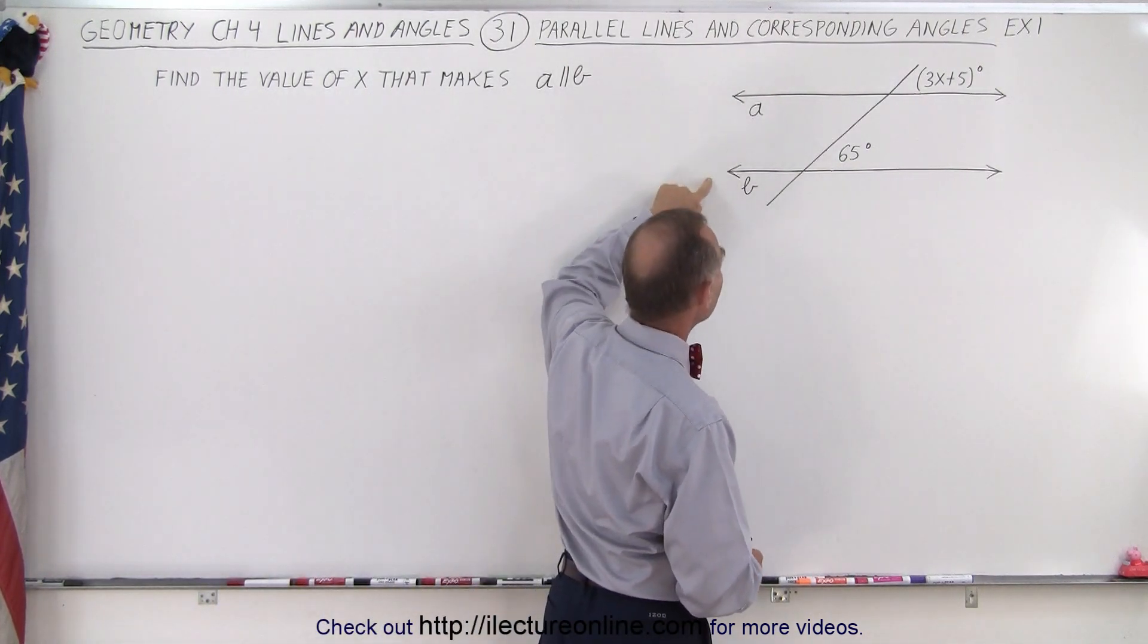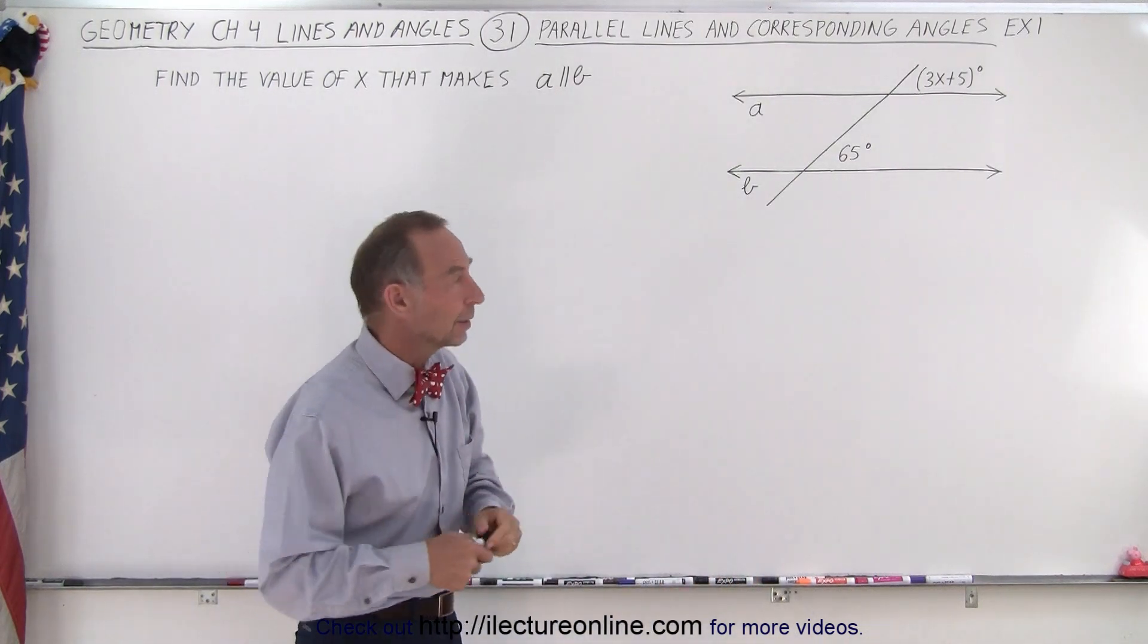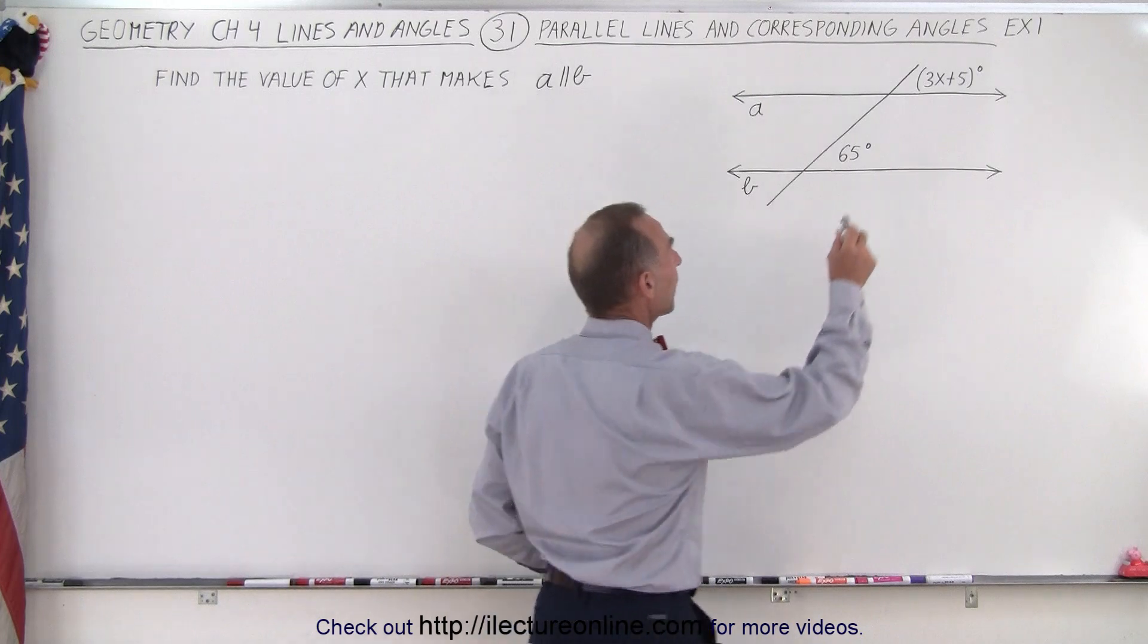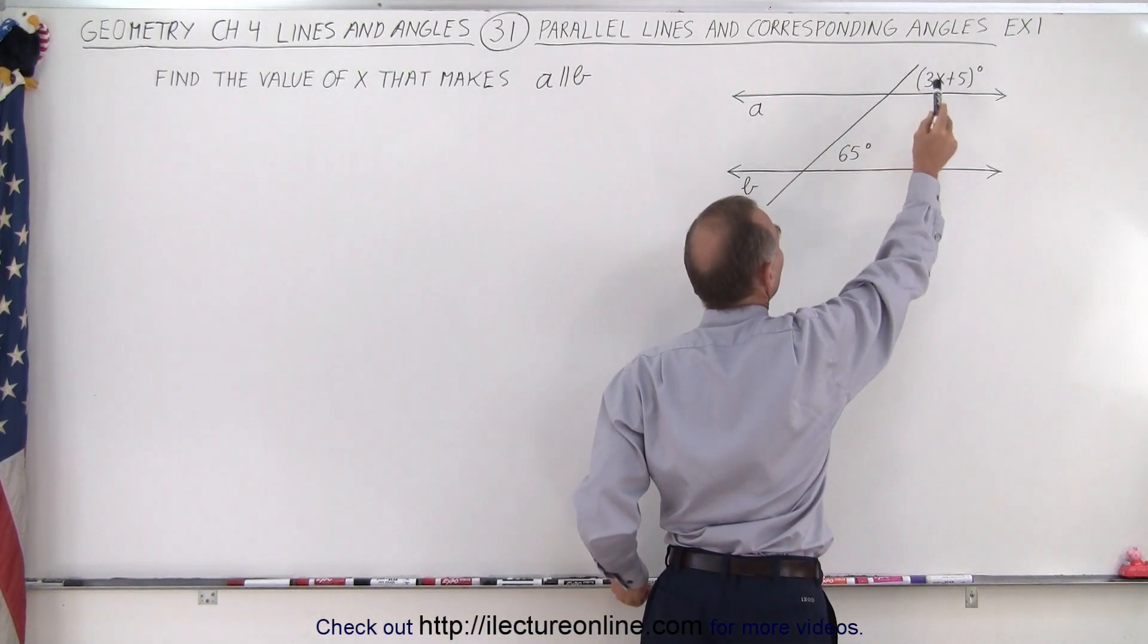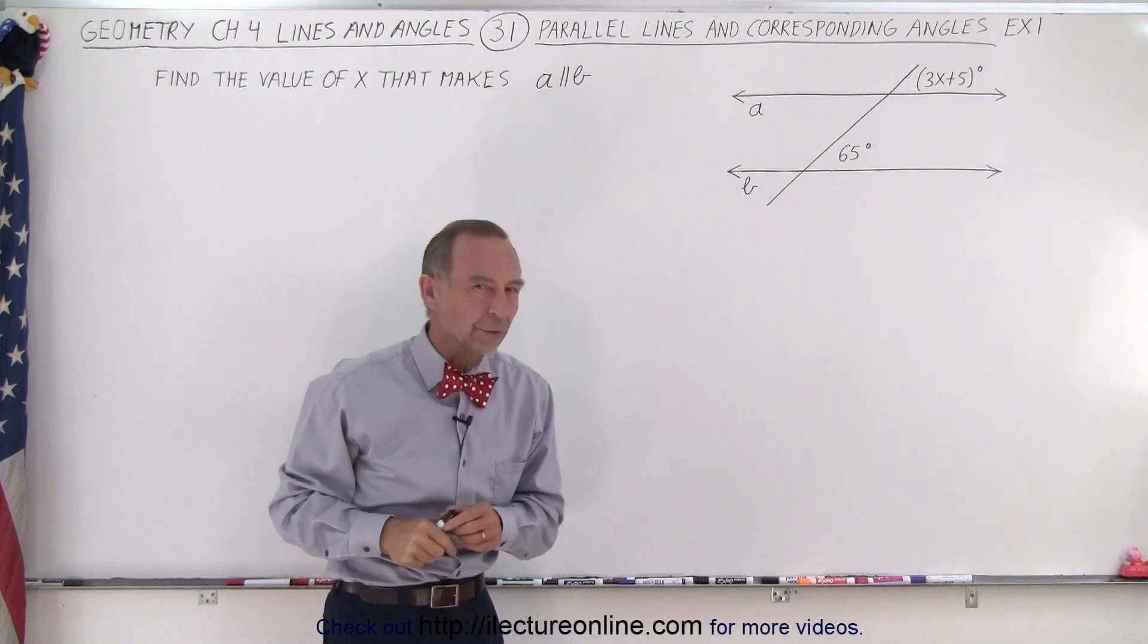So now we name the two lines, a and b. And in order for the two lines to be parallel, we know that the two corresponding angles, which are indicated here by 3x plus 5 degrees and 65 degrees, they must be congruent.